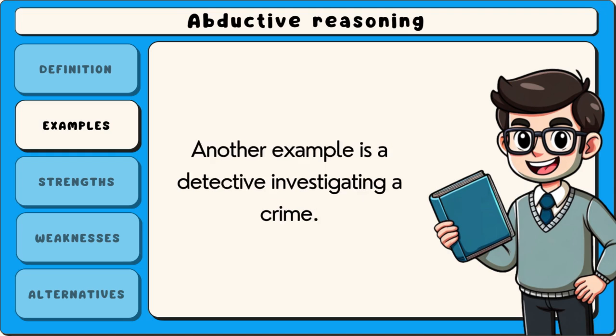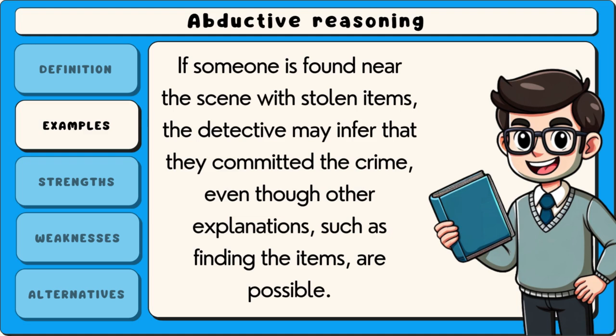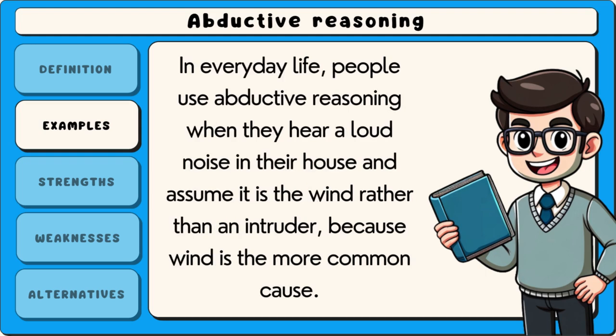Another example is a detective investigating a crime. If someone is found near the scene with stolen items, the detective may infer that they committed the crime, even though other explanations, such as finding the items, are possible. In everyday life, people use abductive reasoning when they hear a loud noise in their house and assume it is the wind rather than an intruder, because wind is the more common cause.